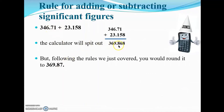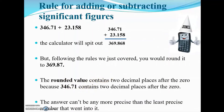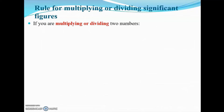You round 369.868 to 369.87 because the number with the smallest number of decimal places after the decimal point has two — specifically 346.71. So the rounded value contains two decimal places. A nice summary is that the answer cannot be any more precise than the least precise number that went into it. Makes perfect sense.